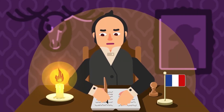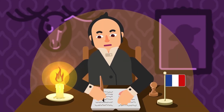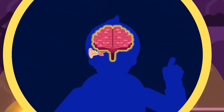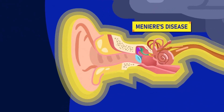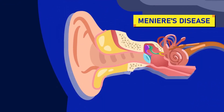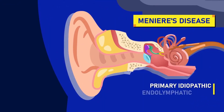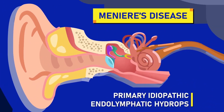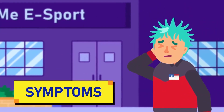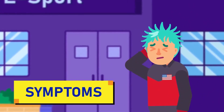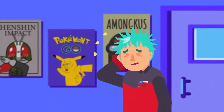Meniere's disease is named after a French doctor, Prosper Meniere, who found that this condition originated in the inner ear, not the brain. Meniere's disease is also known as primary idiopathic endolymphatic hydrops. It is a disorder of the inner ear where fluid is accumulated in the labyrinth or the semicircular canal. Meniere's disease has four main symptoms with one special characteristic — they are periodic.